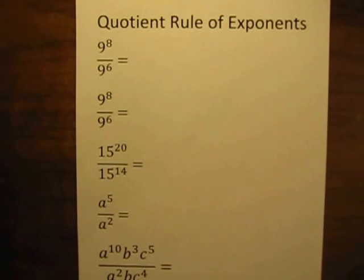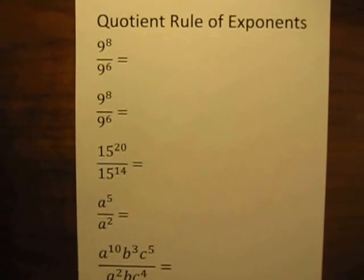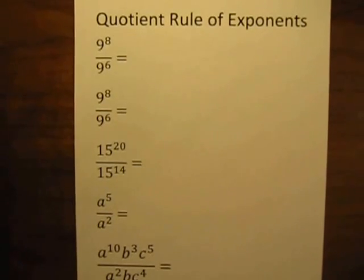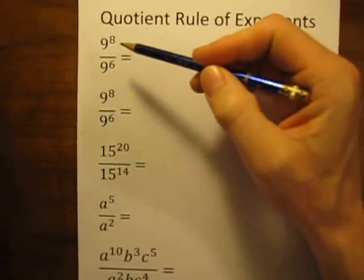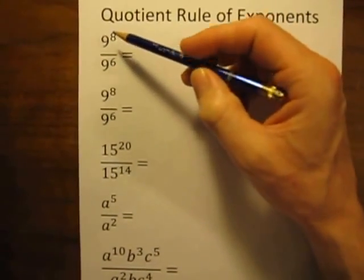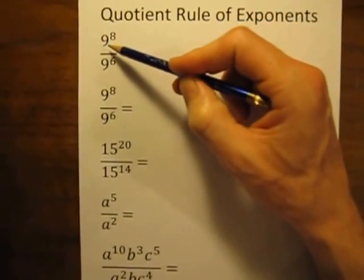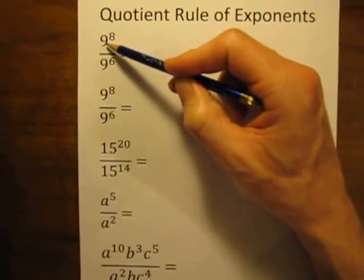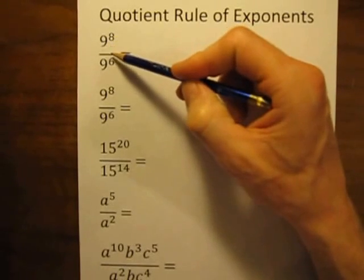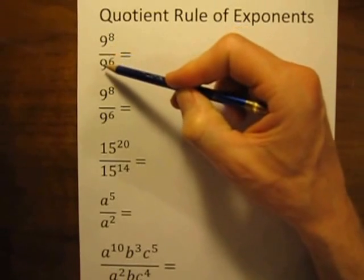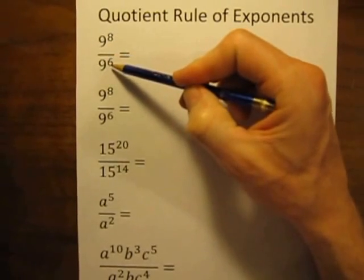The quotient, by the way, is the answer that you get when you are doing a division problem. So in order to use this quotient rule, we have to start with some sort of a division problem. And in this case we have 9 to the 8th power divided by 9 to the 6th power.